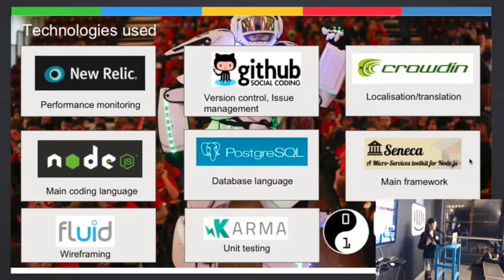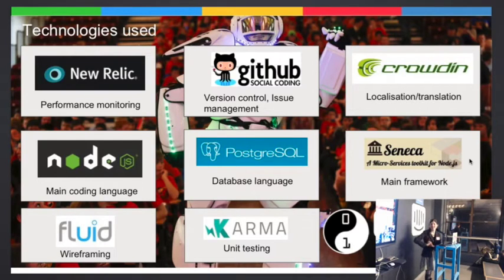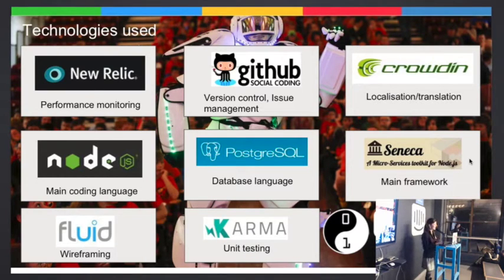We're working on Irish, Finnish, Norwegian, and a bunch of others as well, so if you know anyone interested in helping with that. Node.js is our main coding language. Our database is in Postgres. We're using a framework called Seneca, which is also developed by NearForm — it's a Node.js framework. We're using Fluid UI for wireframing and Karma for unit testing. We have quite a bit of ways to go on our unit testing, but going forward it's something we really want to work on.